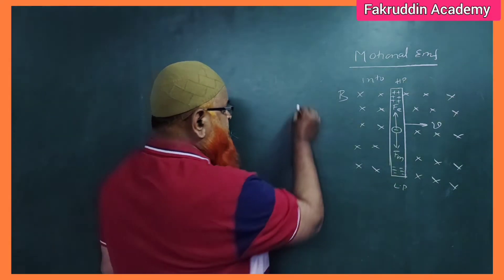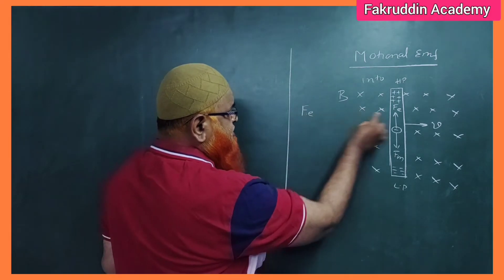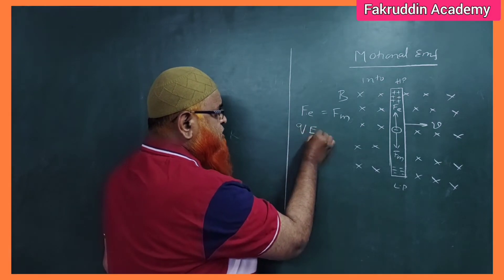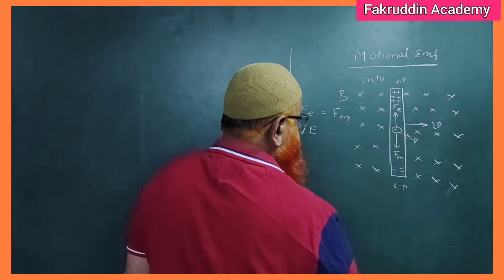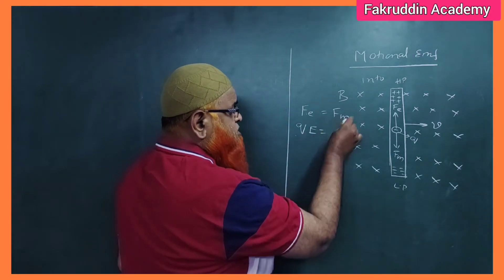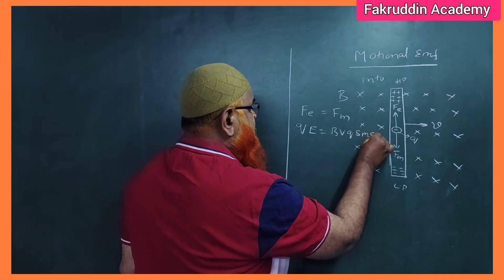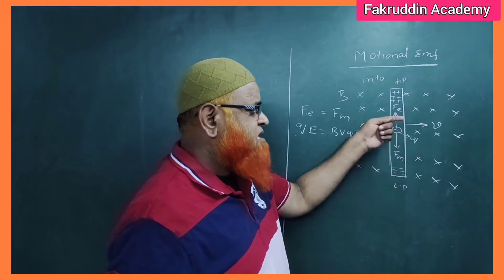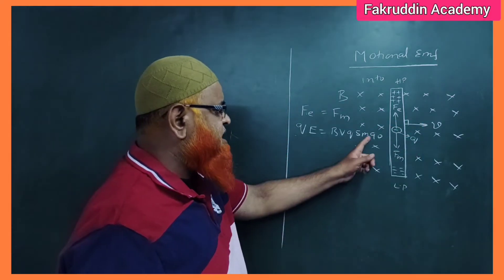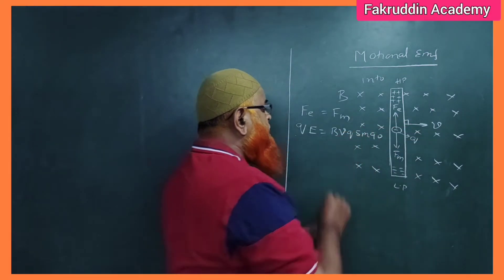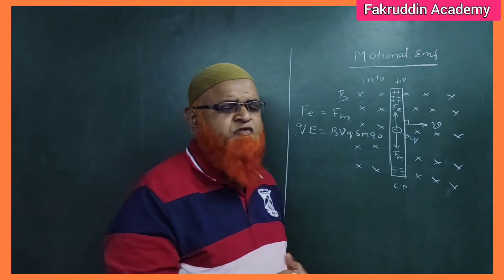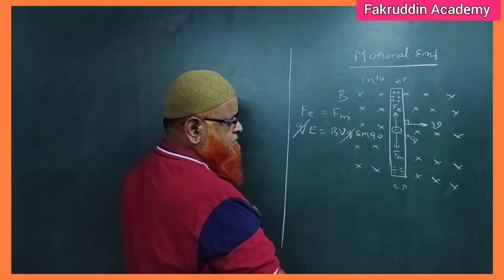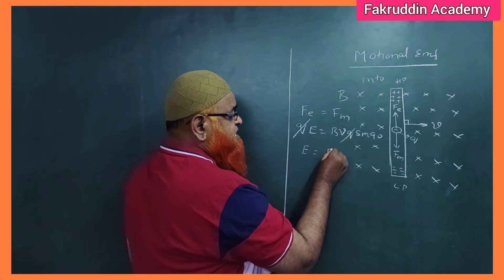Whenever electrons move downwards, a positive charge is created upwards — just like when sodium gives an electron, it becomes sodium plus. The atoms at the topmost point of the rod send all electrons downwards and become positive. This positive end becomes high potential and the lower end becomes low potential. An electrostatic force of attraction develops between the positive charges above and negative charges below.